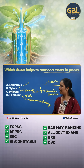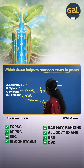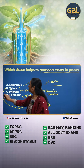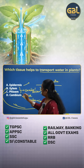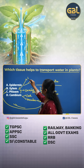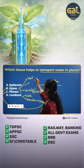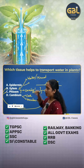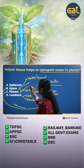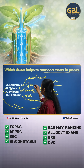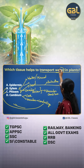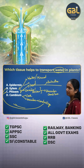The two types of conducting cells in a plant are xylem and phloem. Xylem helps in water transport as well as mineral transport, whereas phloem helps in transport of food. Now, looking at the question — which tissue helps in transport of water in plants?